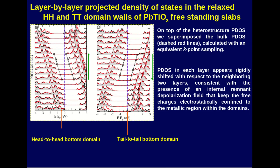Looking at the projected density of states (PDOS): at the head-to-head domain wall (panel A), the conduction band at the interface and the valence band at the surface cross the Fermi level. At the tail-to-tail domain wall (panel B), the valence band at the interface and the conduction band at the surface similarly cross the Fermi level. This is a signature of a remnant depolarizing field from incomplete screening, producing the observed band bending at both domain walls.